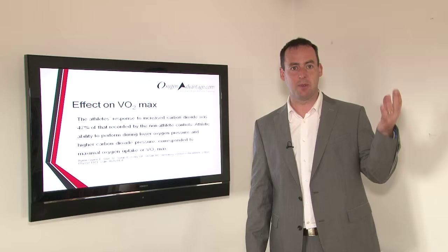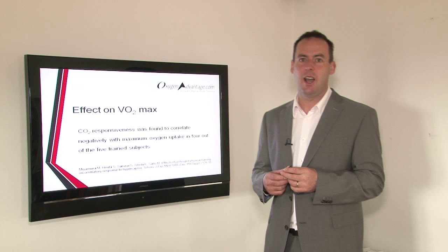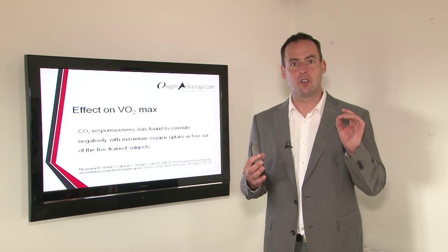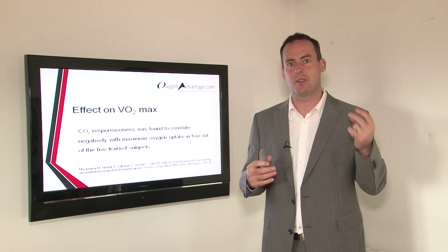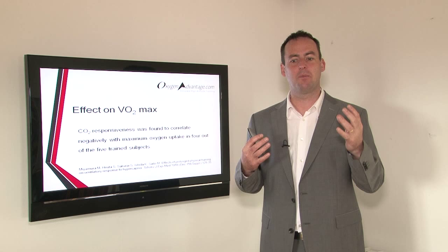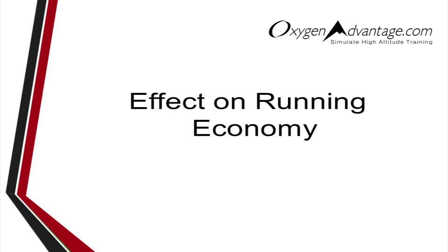So it's advantageous in terms of VO2max to have a high tolerance to CO2 and to be able to tolerate a drop in oxygen saturation. In this paper, CO2 responsiveness was found to correlate negatively with maximum oxygen uptake in four out of five trained subjects. Athletes who had a good tolerance to carbon dioxide had high VO2max. Conversely, if an athlete had a strong ventilatory response to carbon dioxide, they had a reduced VO2max, because their strong response to the build-up of carbon dioxide increased their breathing volume, and this negatively affected VO2max.